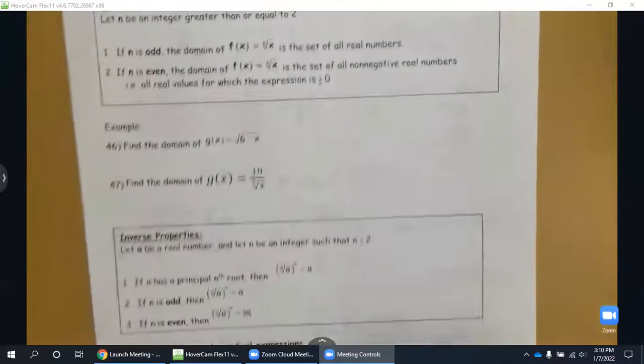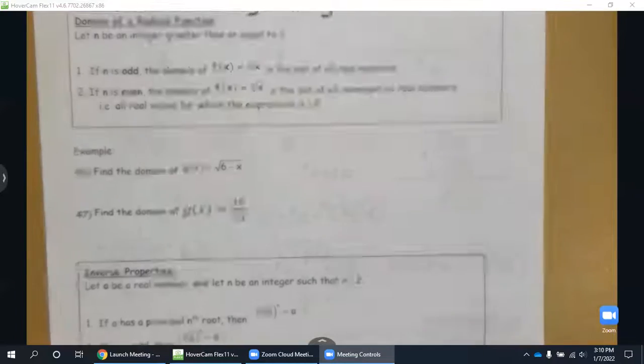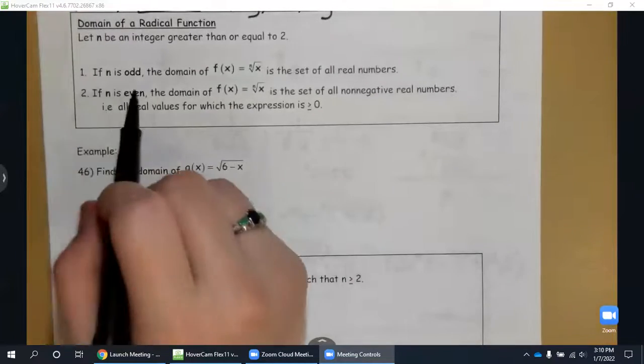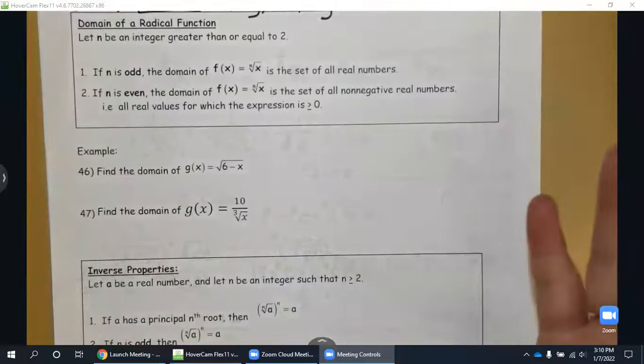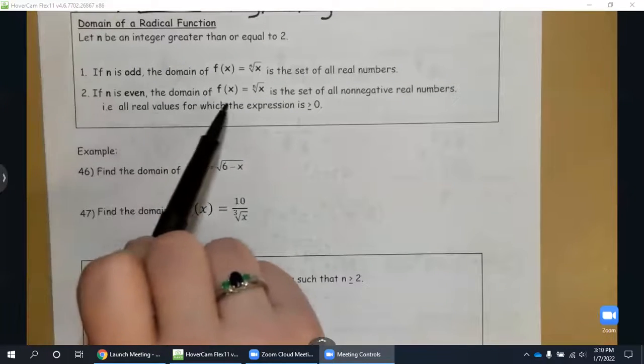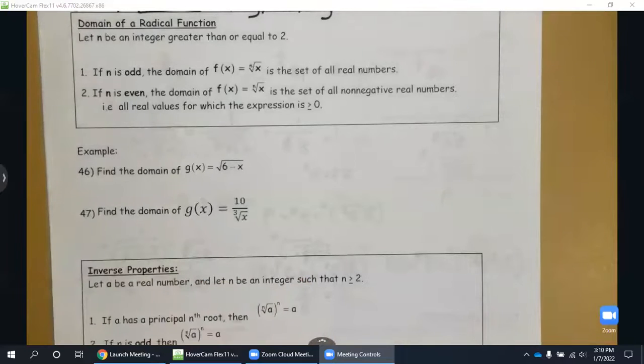Alright, so now we're going to move on to something a little different and we're going to be talking about the domain of our radical functions. So when we have an odd root, it's all real numbers because we can take roots of negatives. But when we have an even root, our value inside our radical has to be greater than or equal to zero because we can't take square root, fourth root, sixth root, et cetera, of negative values.